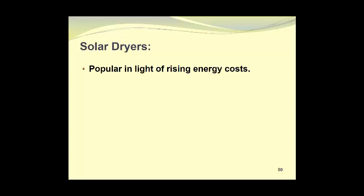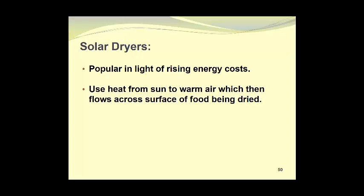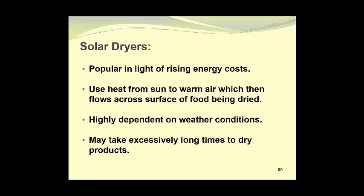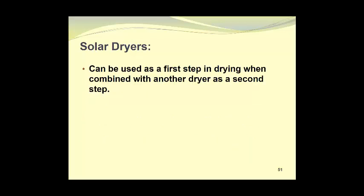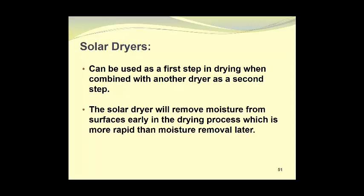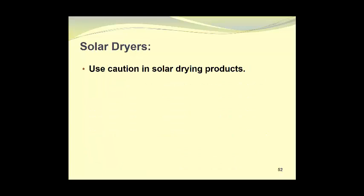Solar dryers are popular in light of rising energy costs. They use heat from the sun to warm the air which then flows across the surface of the food that is being dried. They are highly dependent upon weather conditions. And they may take excessively long times to dry the product. Solar dryers can be used as a first step in drying when combined with another dryer as a second step. The solar dryer will remove moisture from the surfaces early in the drying process which is more rapid than moisture removal later. So the solar dryer can do the initial heavy lifting work.